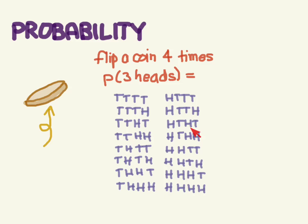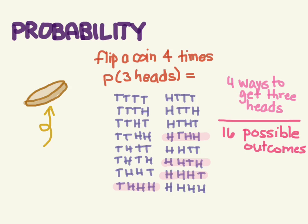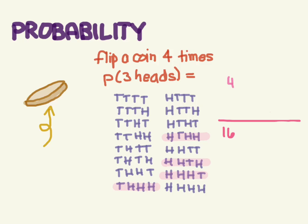So how many ways can we get three heads? There are four ways to get three heads over a total of 16 different possibilities that we could get. So we have four divided by 16, and that equals 0.25 or 25%.